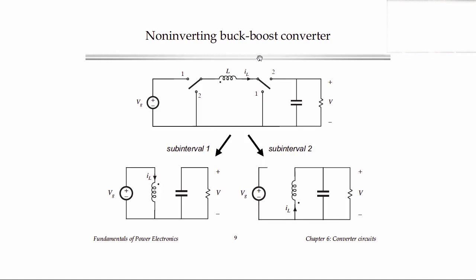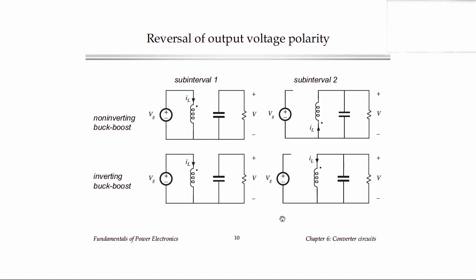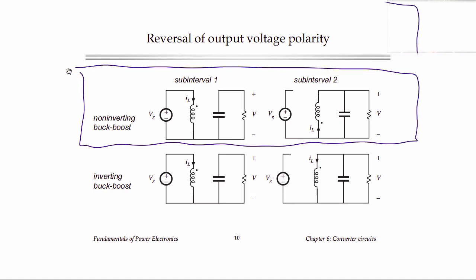There's something else we can do to the non-inverting buck-boost converter. Looking at what the circuit is in the two switch positions — assuming both switch networks operate with the same duty cycle — when the switch is in position one, the inductor is connected to VG, with the dot side connected to VG and the non-dot side connected to ground. In sub-interval two, the dot side of the inductor is connected to ground and the non-dot side is connected to the output. One simple thing we can do is change the polarity of the inductor during one of the intervals.